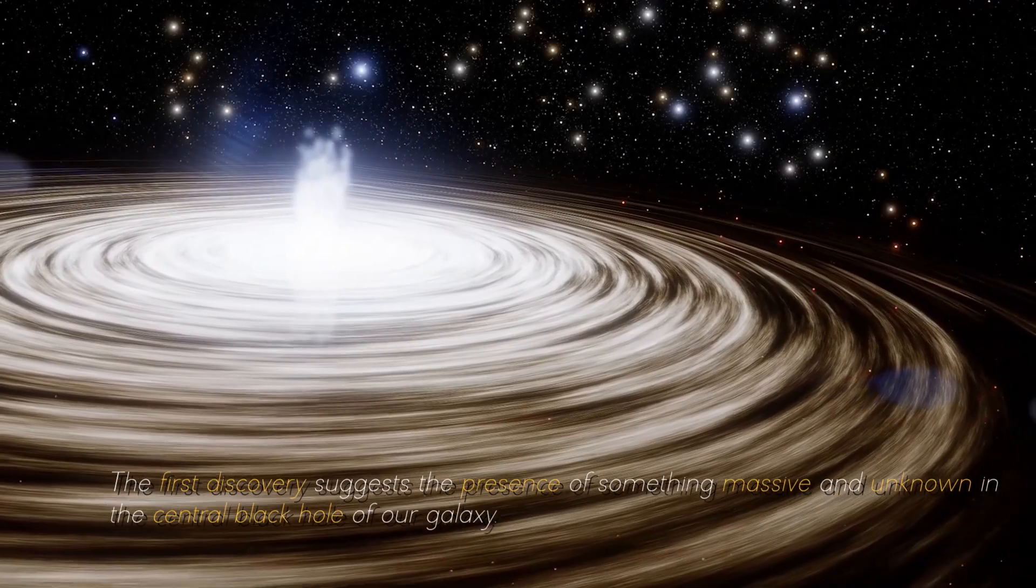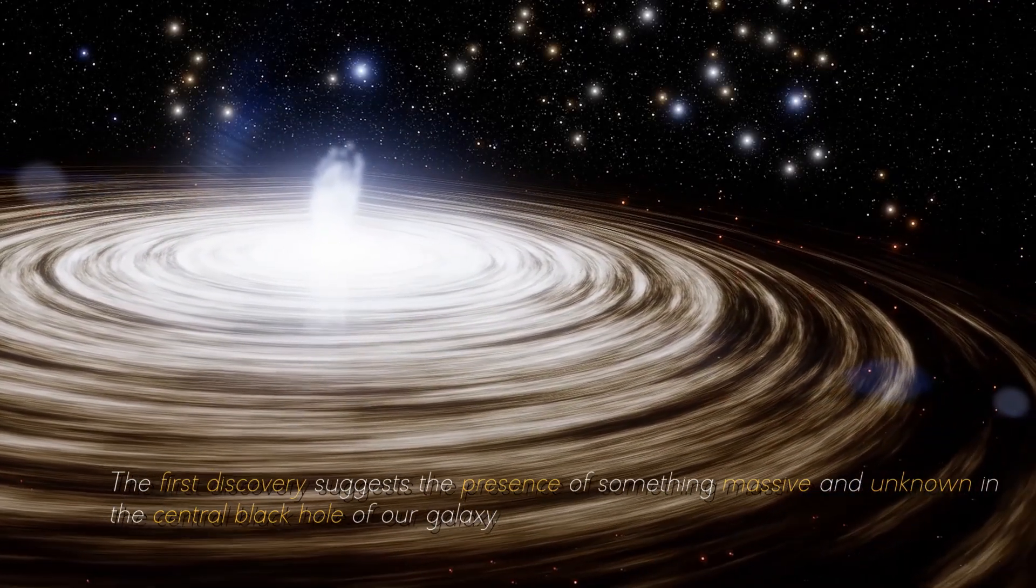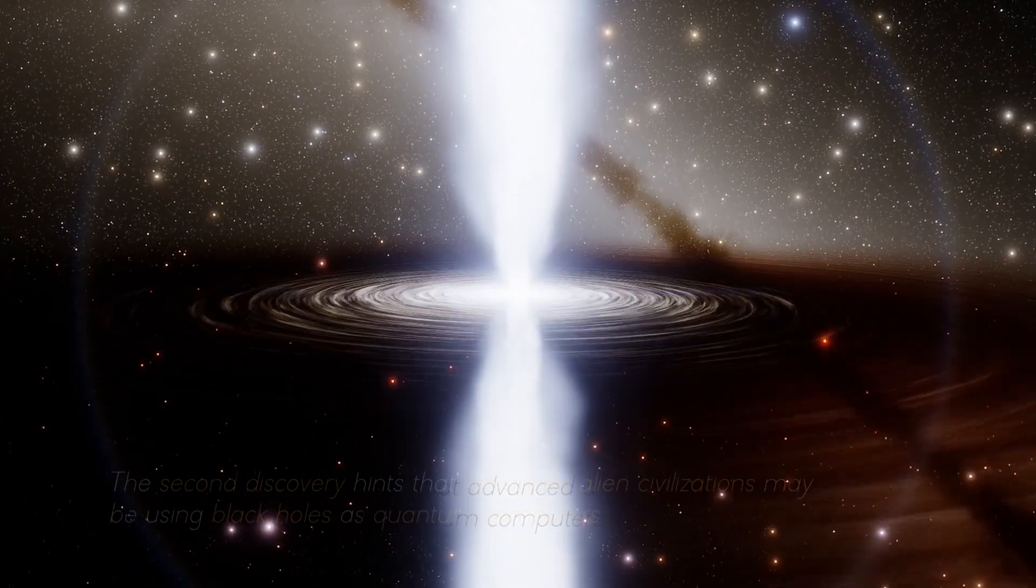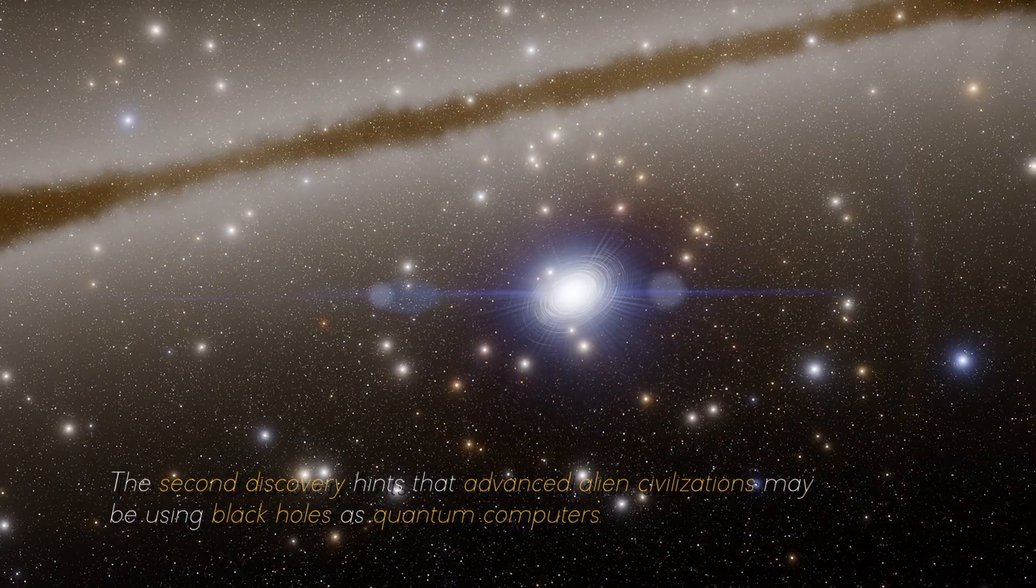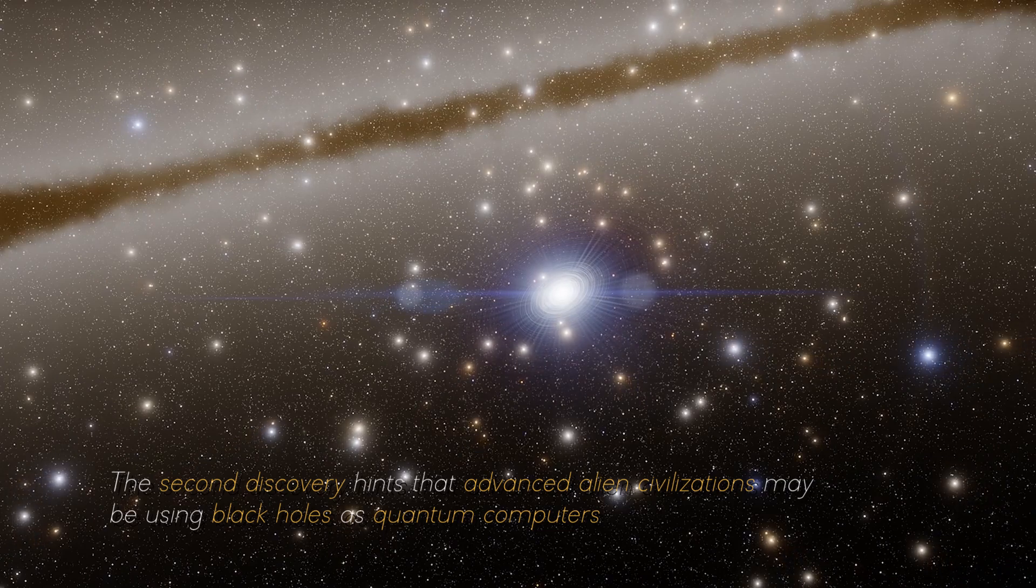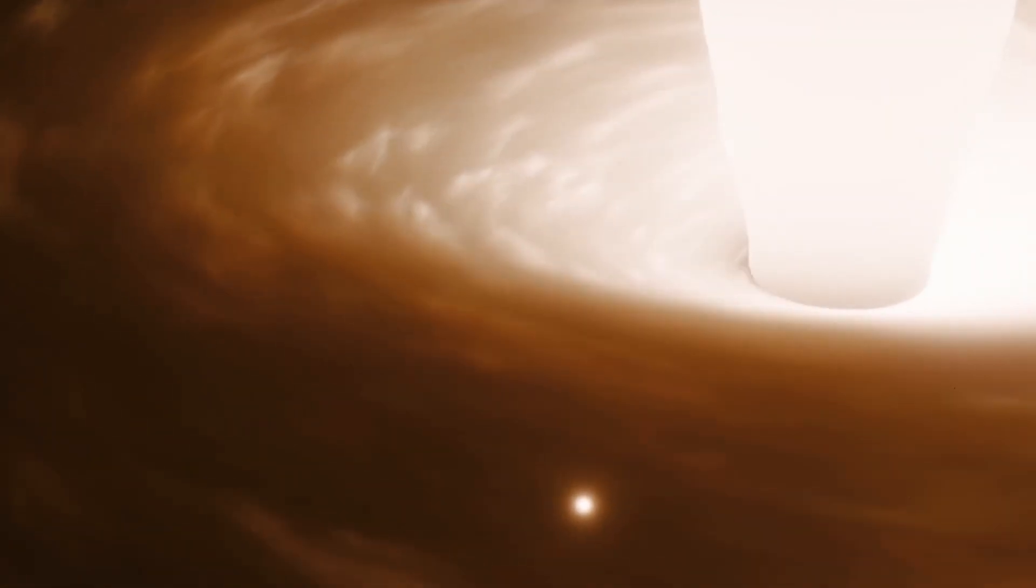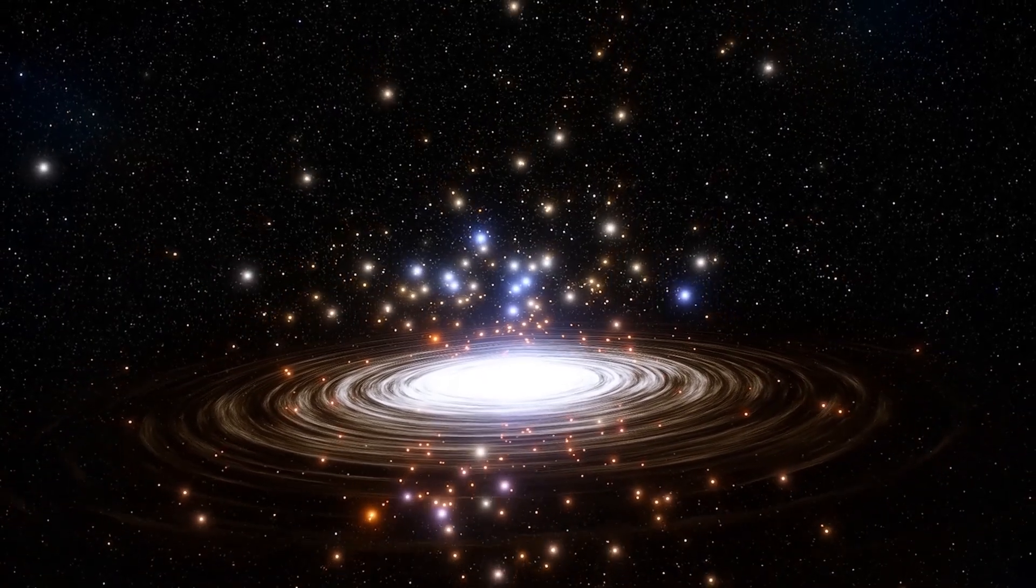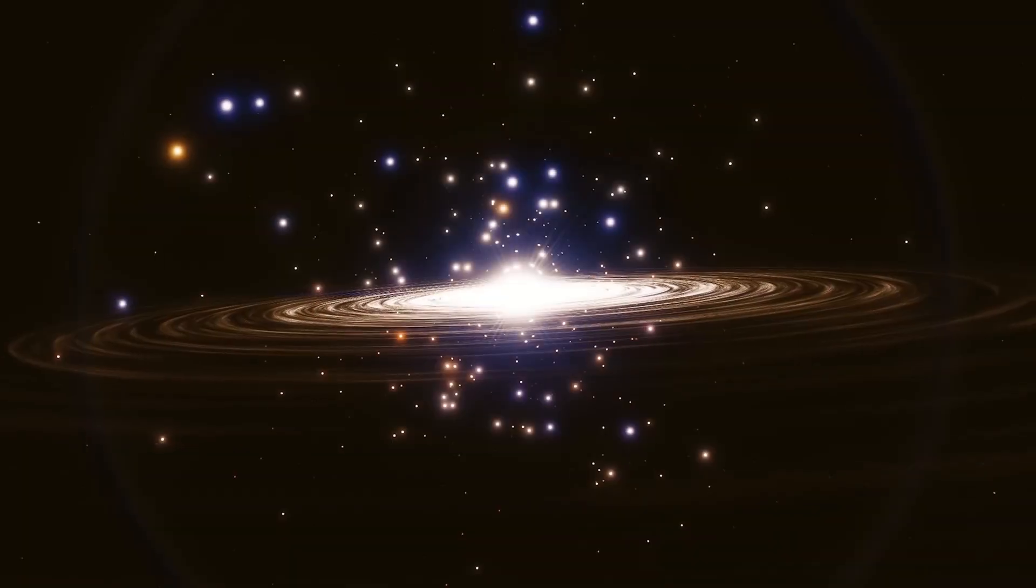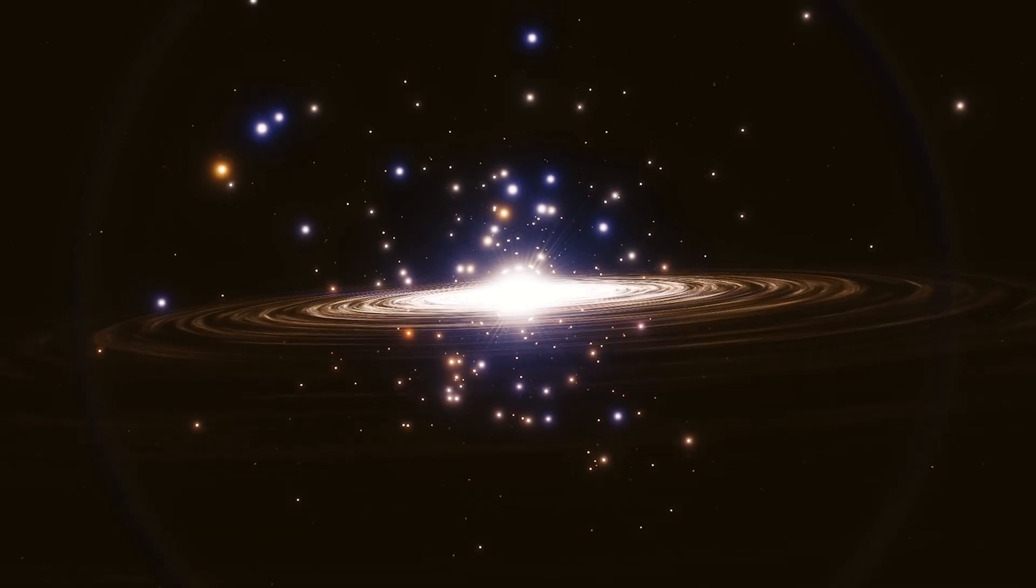Two discoveries made in early 2023 have perplexed scientists. The first discovery suggests the presence of something massive and unknown in the central black hole of our galaxy. The second discovery hints that advanced alien civilizations may be using black holes as quantum computers. These two findings close in time could be interrelated, raising intriguing questions about the nature of black holes as well as the possibility of advanced extraterrestrial intelligence exploiting these mysterious singularities in space.